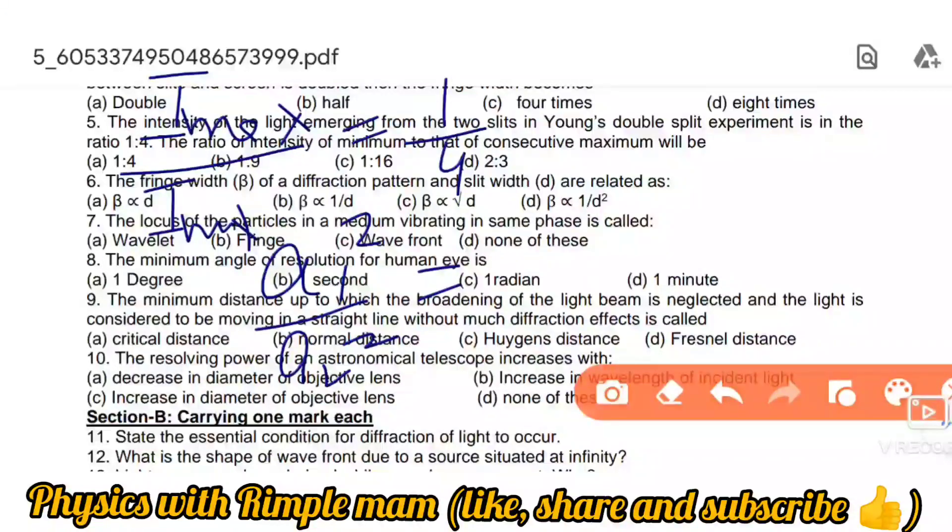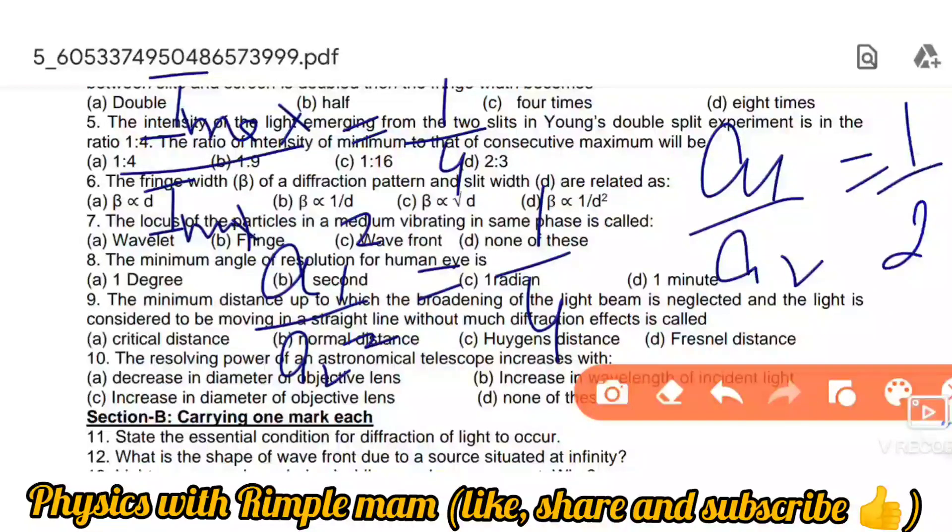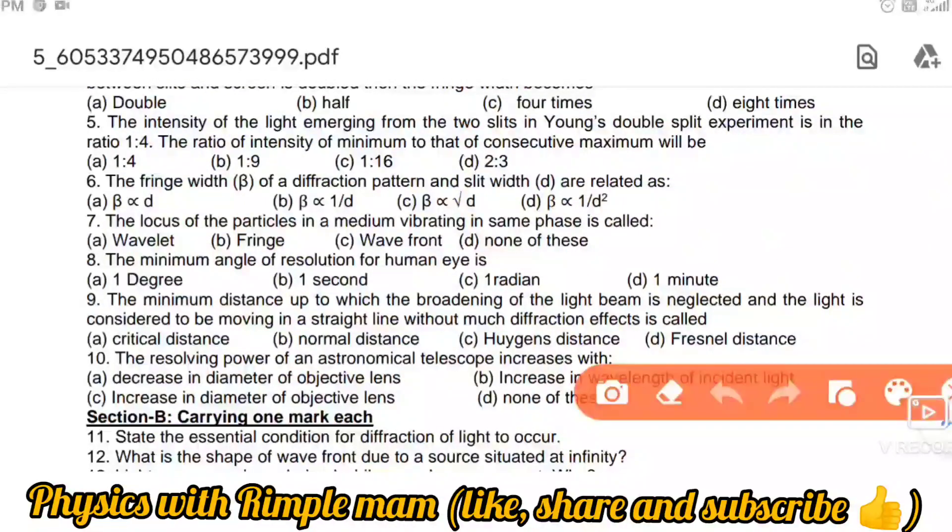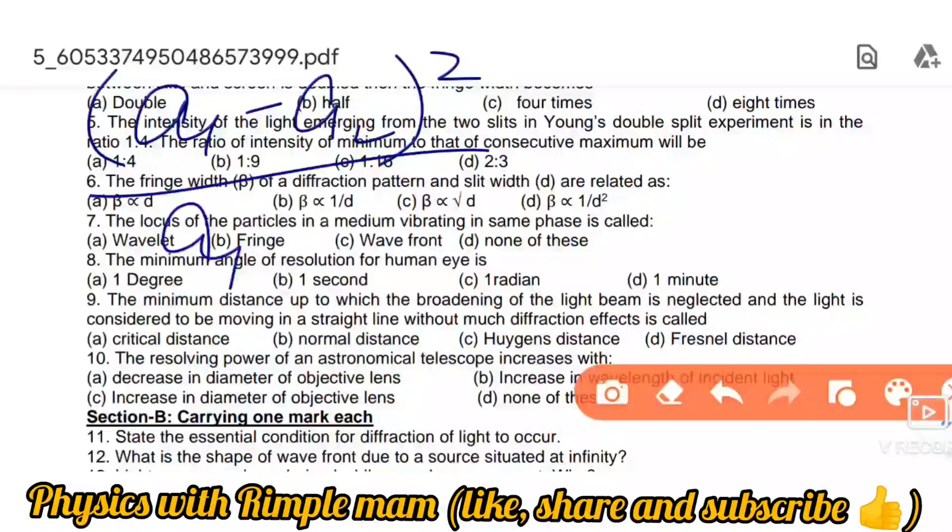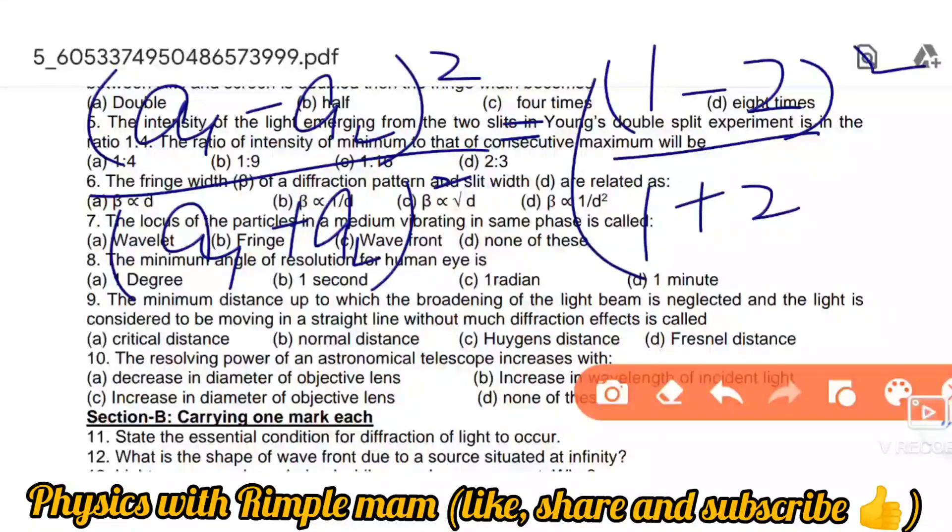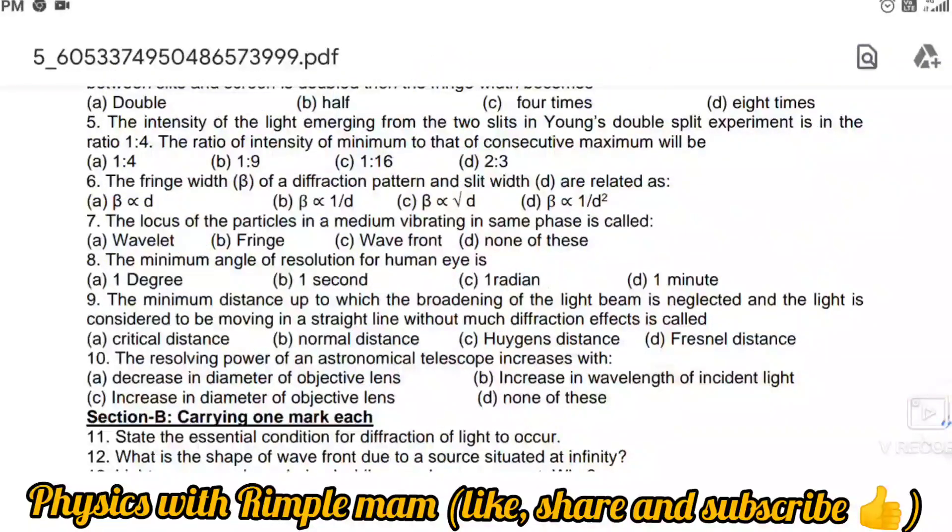Given i1 over i2 equals 1 over 4, so a1 over a2 equals 1 over 2. The formula is I maxima over I minima equals (a1 plus a2) whole squared divided by (a1 minus a2) whole squared. Substituting values: (1 plus 2) squared over (1 minus 2) squared equals 9 over 1. So the ratio is 1:9, which is option 2.